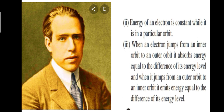When electrons move from inside to outside orbits they absorb energy, and when moving inward they emit energy, equal to the difference of the energy levels. This is the most important part of what Neil Bohr gave us, providing the basis for explaining atomic stability - electrons have specific places and specific energy levels.